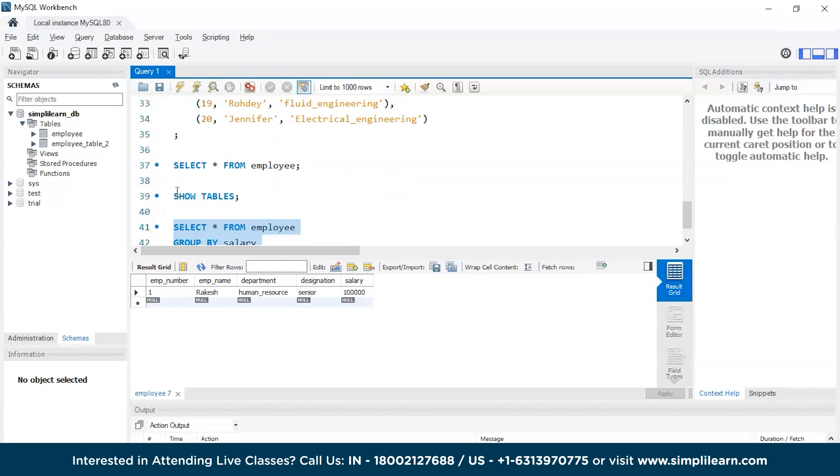Now let's say we want to find the third highest salary. So here N-1, that is 3-1 is 2. And execute this, and there you go - you have Regina.